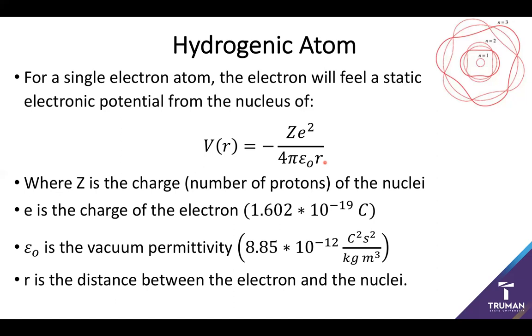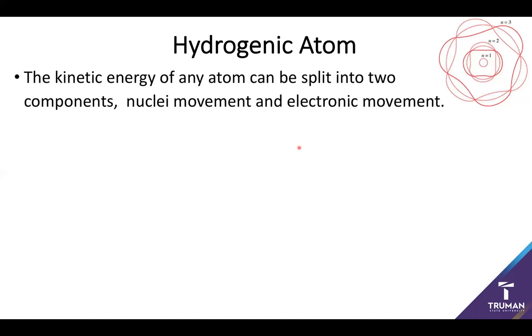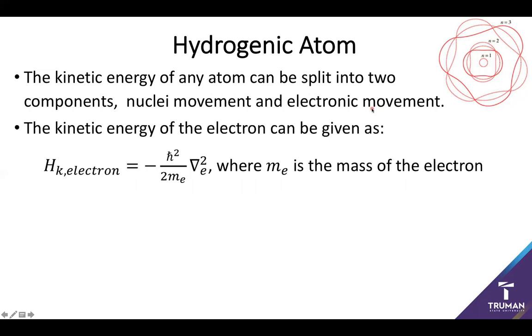In addition to this potential, we have a more tricky kinetic energy than we're used to. Our kinetic energy involves two separate components. In addition to the electronic movement that we typically think of, we also have movement of a nucleus. The kinetic energy of the electron is going to be a fairly familiar basic form.